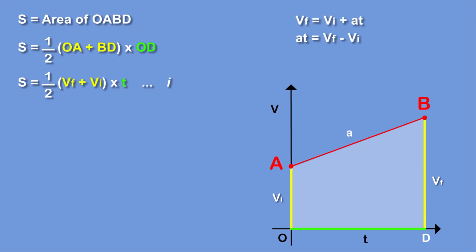As per the first equation of motion, t equals vf minus vi over a. So by putting the value of t in equation 1, we will get s equals half vf plus vi into vf minus vi over a.